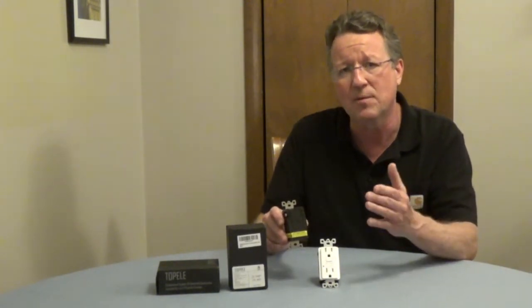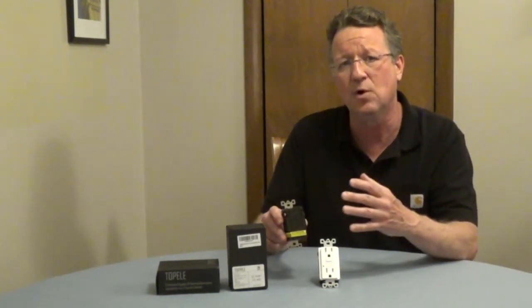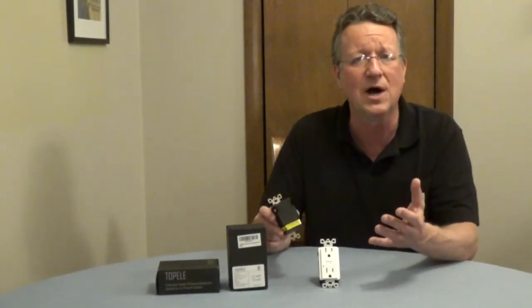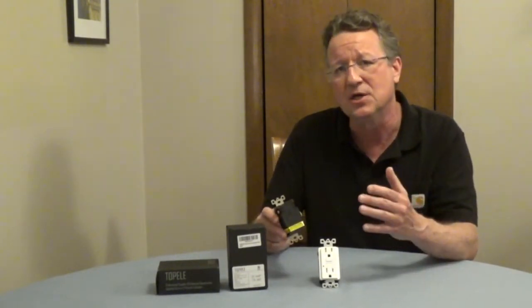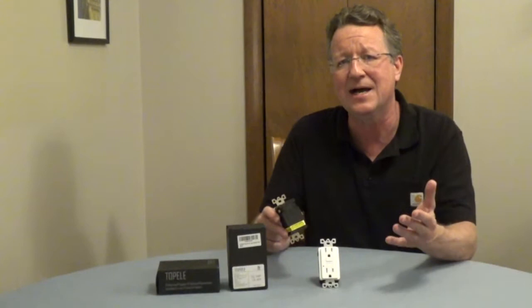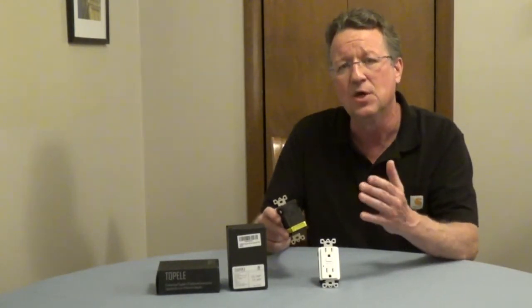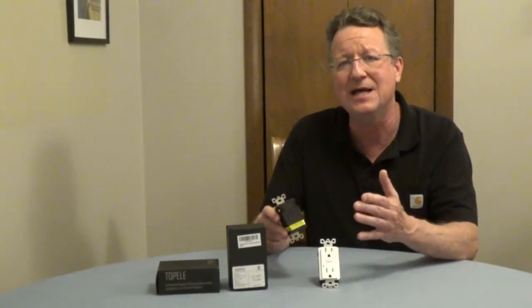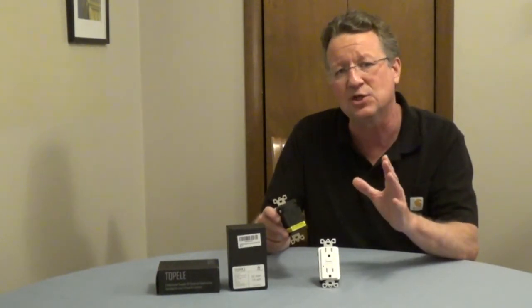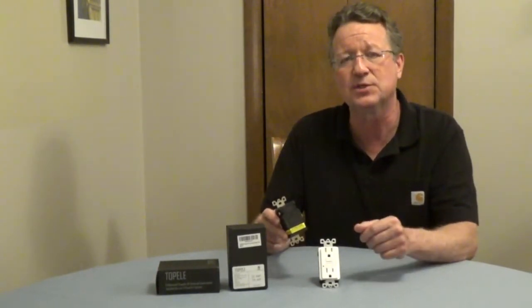So you're going to turn off the power, make sure it's off, remove the old outlet. You're going to separate the wires so nothing's touching. You're going to turn your power back on, and you're going to test the two black wires. When you find the black wire that's hot, you're going to mark that wire, and that's your hot cable coming from the service panel.